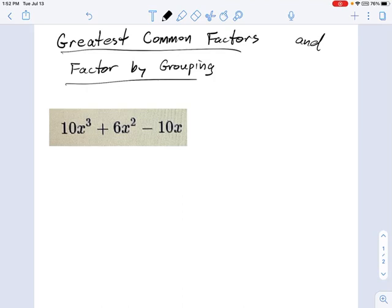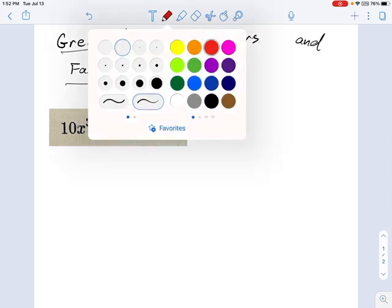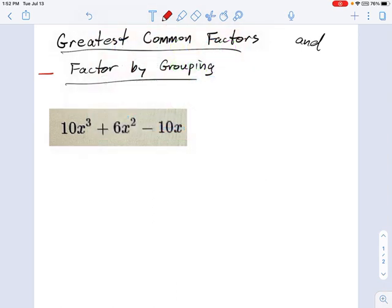So our two most basic factoring techniques are what are called greatest common factors, or finding GCFs, and factor by grouping. Now, for factor by grouping, we don't actually use this a whole lot. This one right here, it's not common, but GCFs are very, very common, and I want to go over how we find a GCF.